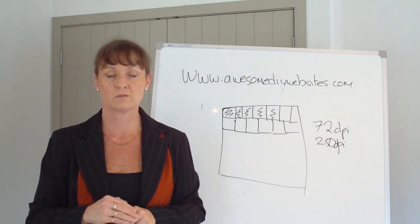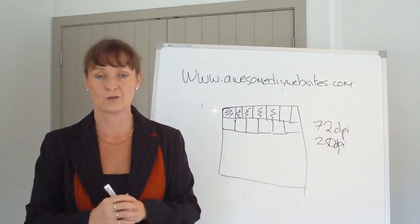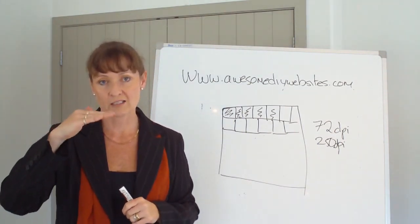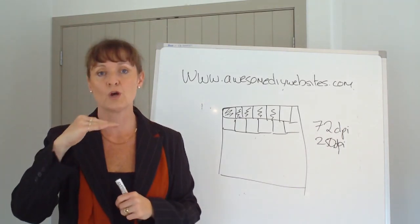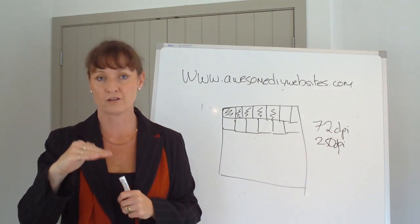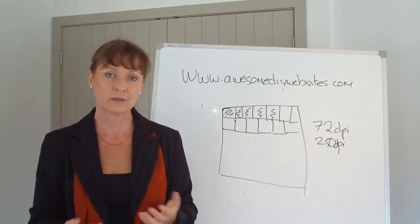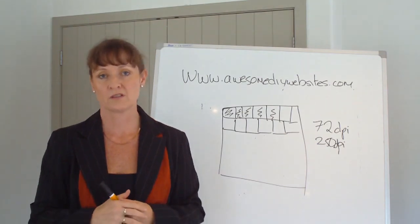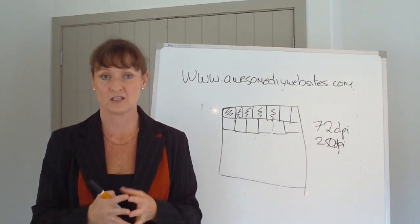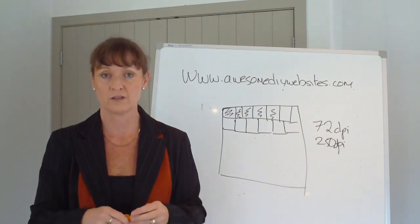You'll notice that sometimes when you're looking at a website it chugs along. It seems to load a line of the photograph at a time, and that is typically because a person has loaded an image that is much larger, larger than 72 dots per inch.